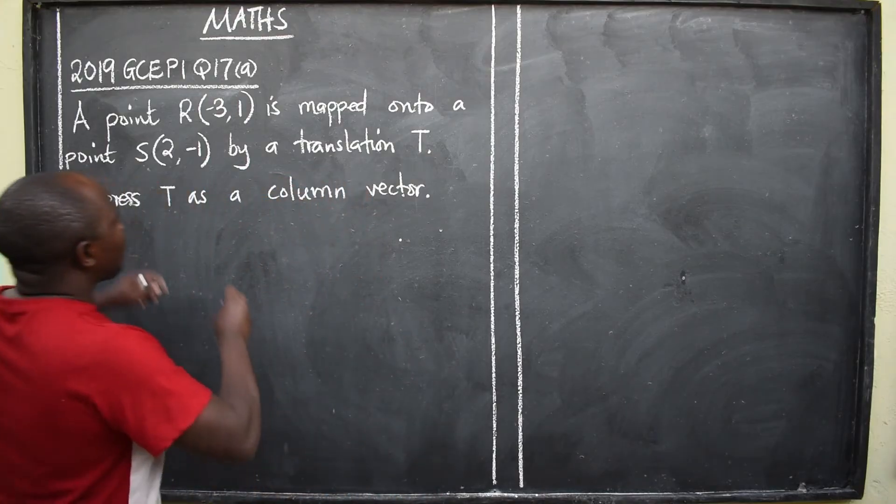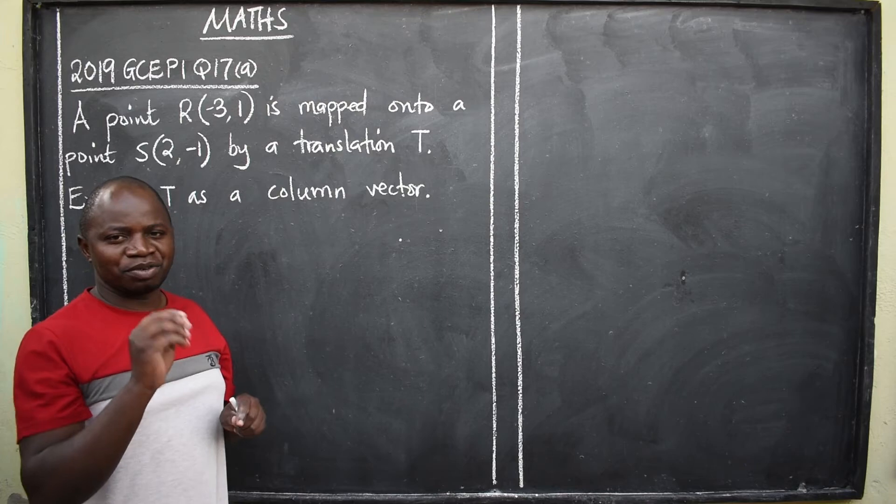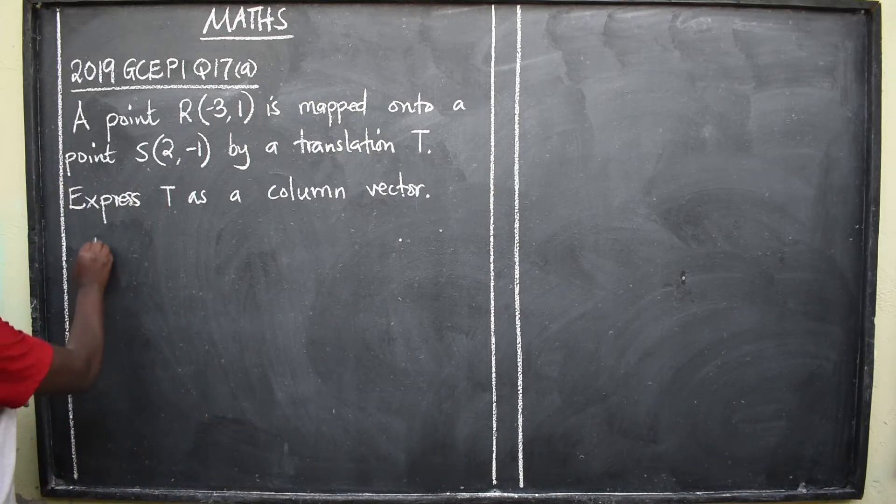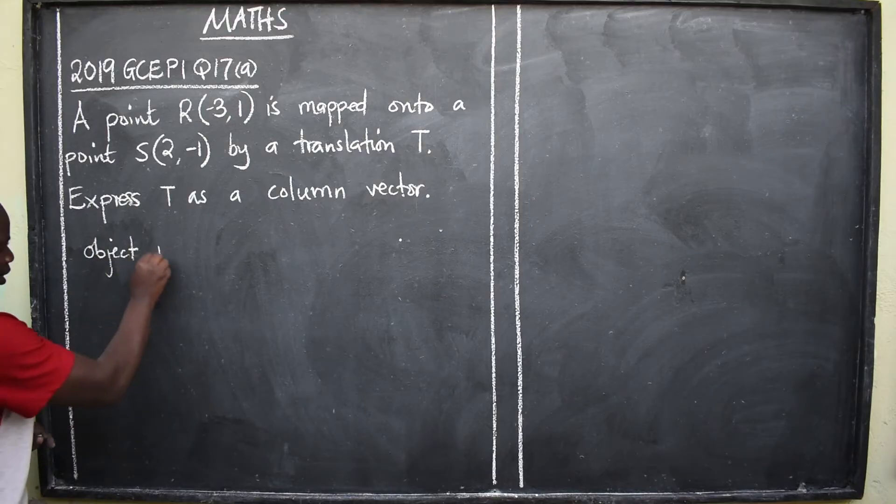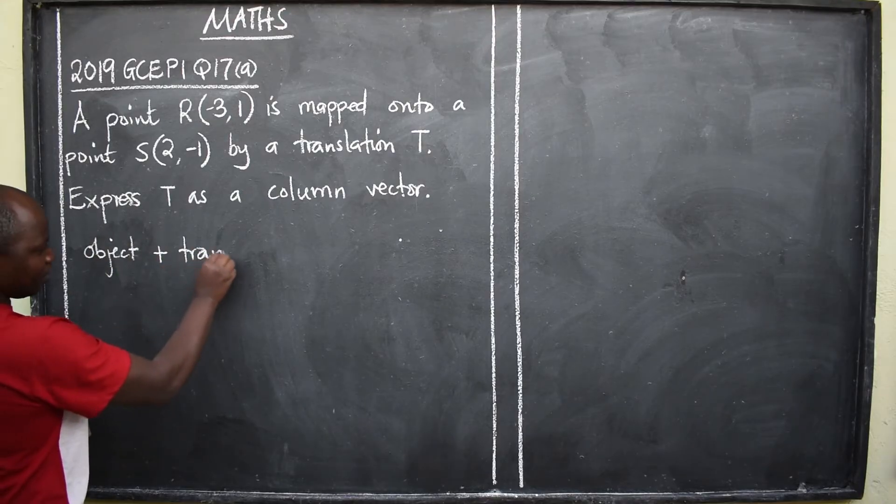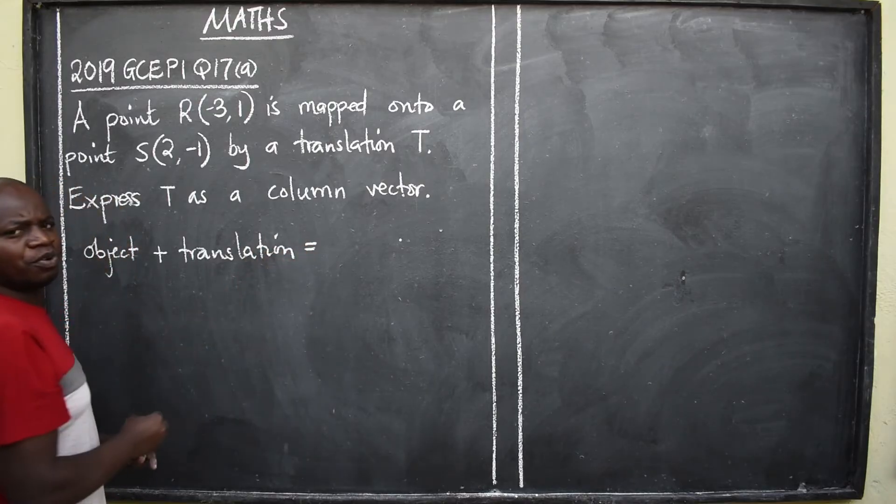Now, whenever you are given such kind of questions, always remember this formula. Object plus translation should always give you image.